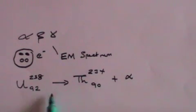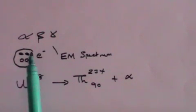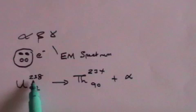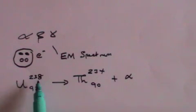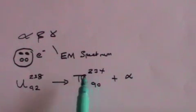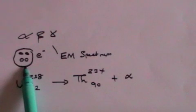If you notice, the uranium had 92 protons, whereas thorium has only 90, because the other two are in the alpha particle. Uranium had 238 nucleons — that's protons and neutrons — whereas thorium has only 234. The difference is four because there are four nucleons in the alpha particle.